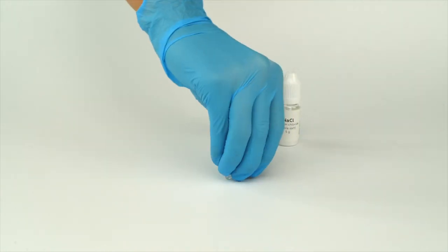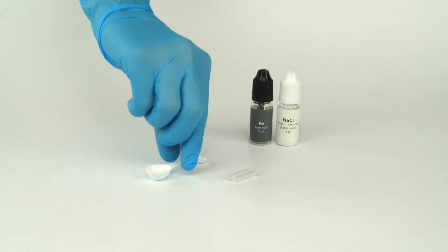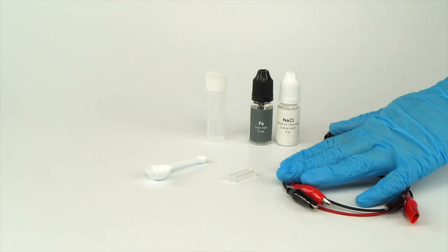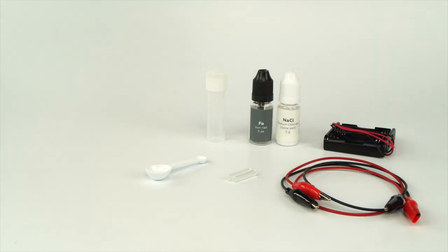For the nail break experiment, you will need sodium chloride, iron nails, the rubber tubes, the measuring spoon, a vial, the battery holder, and the crocodile clip wires from your experiment set. Take a disposable plastic cup from your starter kit. Prepare a cup of water and four AAA batteries in advance.